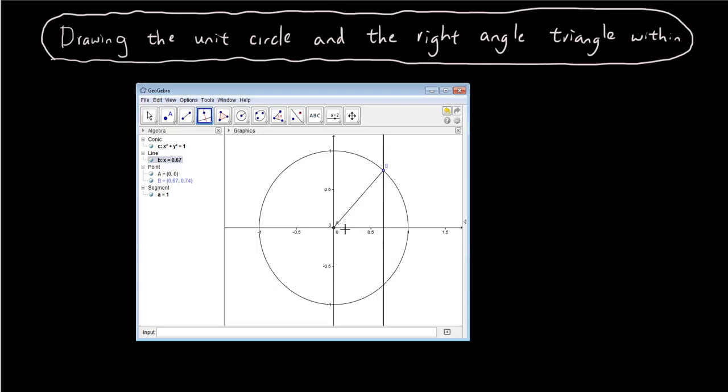So you can see that wherever I drag point B, this line follows point B and it is always perpendicular to the y-axis.